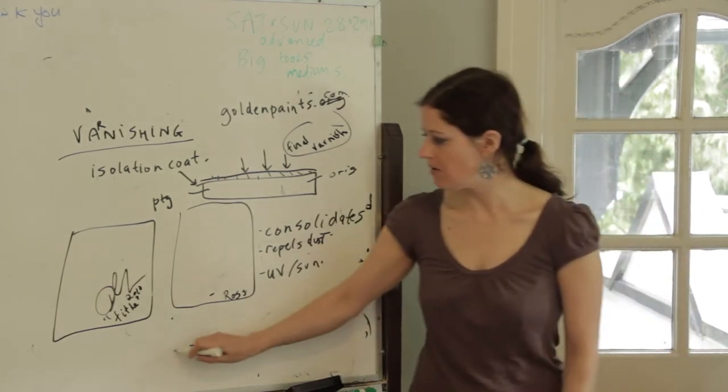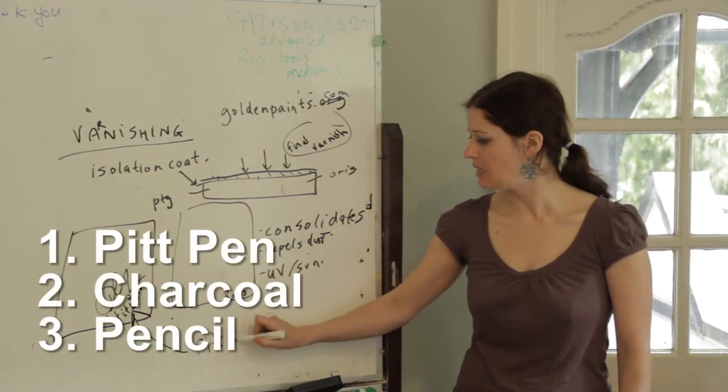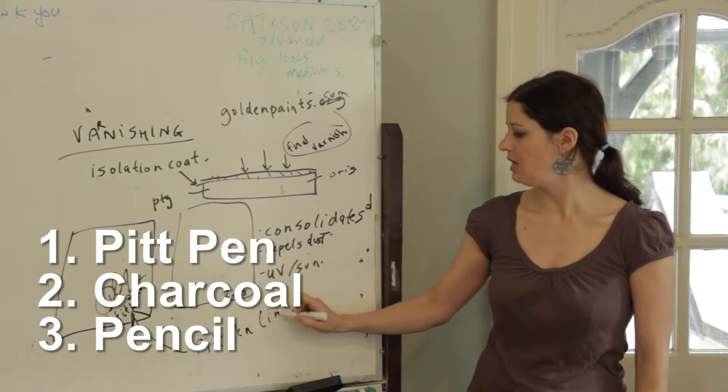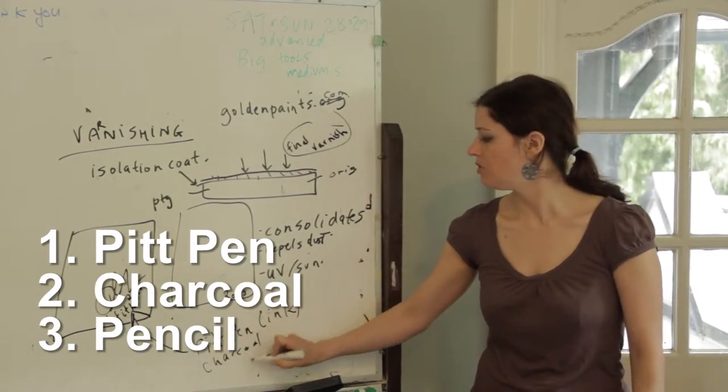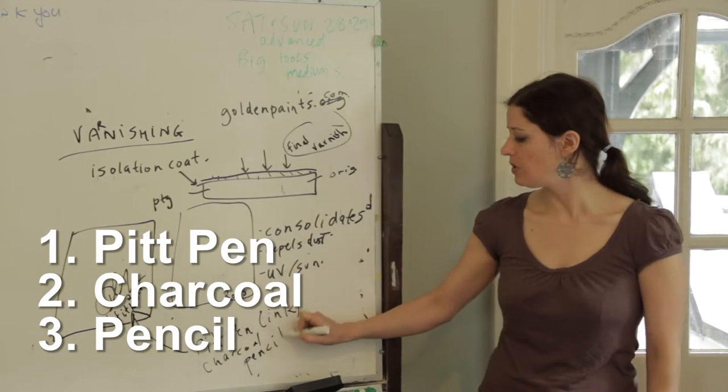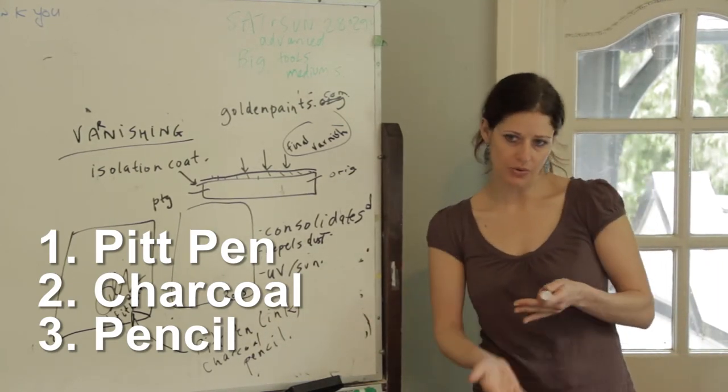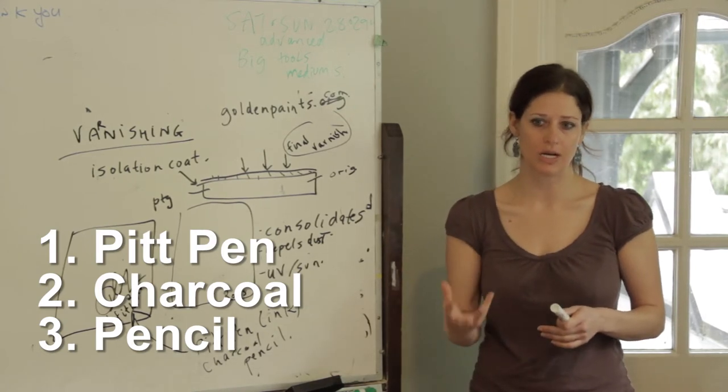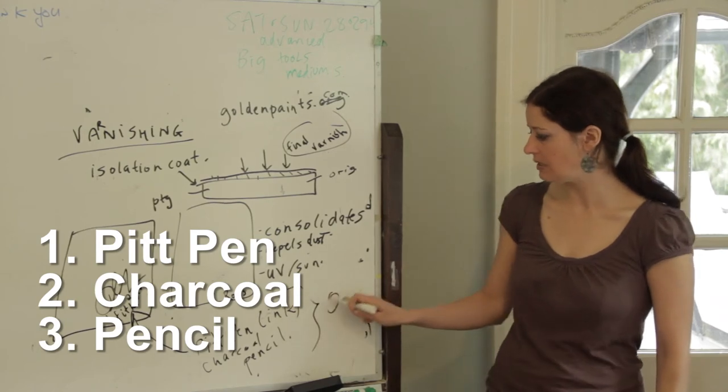You also want to be careful what you use. You could use a Pitt pen, charcoal, or pencil, but don't use a Sharpie because they have acid in them and it will go through if you're using canvas and will actually start changing and degrading the painting and the color. So these things are all okay for signing.